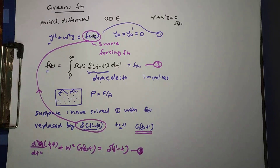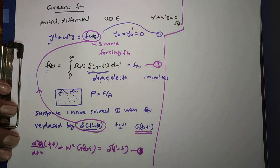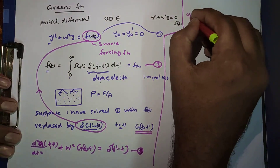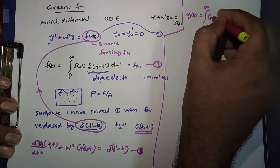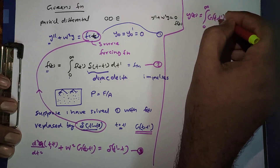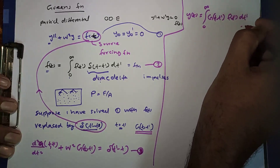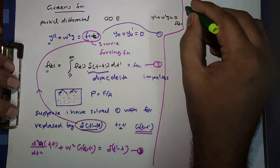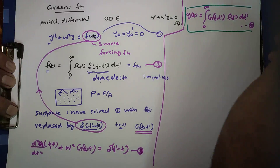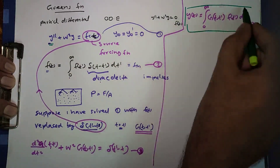Then the solution of equation 1 will be: y of t equals the integral from 0 to infinity of g of t, t prime times f of t prime dt prime. This is equation number 4, and this will be the solution of the differential equation.